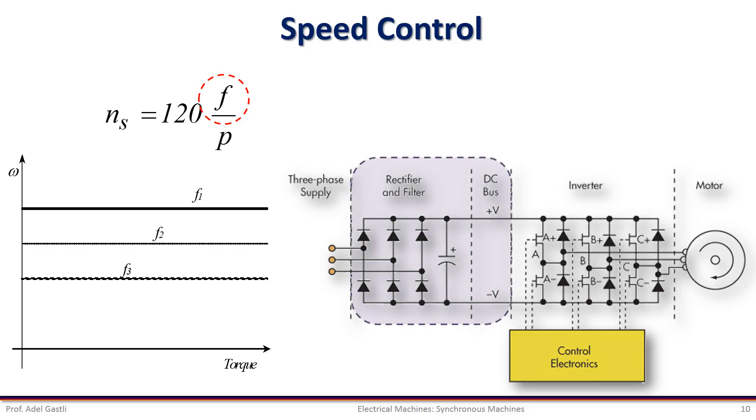The three-phase AC power is first converted into a DC power using a rectifier. Then, this DC power is converted back into AC, but with variable frequency using an inverter.